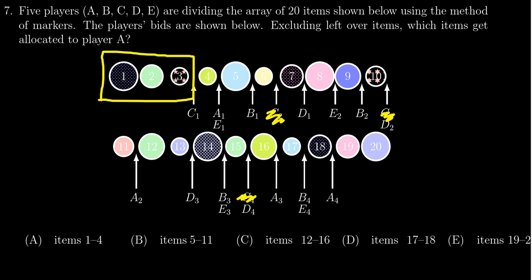Now we're going to look for the next second bid. Coming over here, we get player E—that's their second bid, E1 right here. So E is going to get these items: 5, 6, 7, and 8.